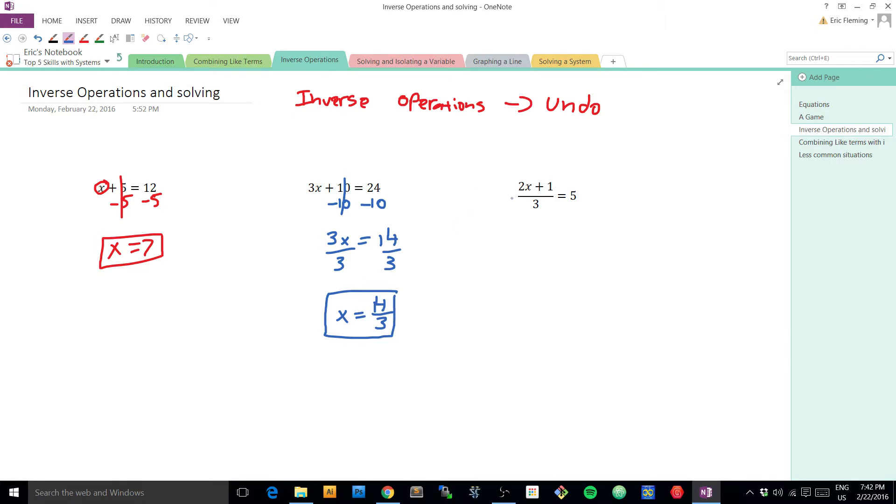In this last example, there's actually 3 layers right here. So here's the x. The next closest layer is this 2. The next closest layer is this plus 1. And then the outermost bigger layer would be that divide by 3. So I know the order I want to take care of them is, I want to get rid of the divide by 3, then I want to get rid of the plus 1, and then I want to get rid of the times 2.